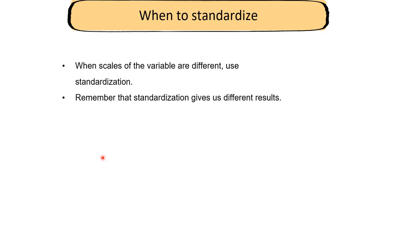To summarize: if your variables have largely different scales, you want to standardize the dataset first before doing PCA. Standardizing means you look at the correlation matrix instead of the covariance matrix. It's important to note that standardization changes the results — whether you choose to standardize or not will give you a different solution.